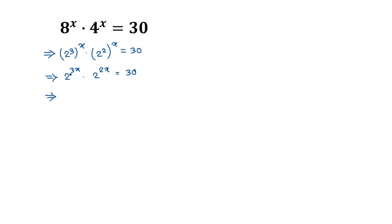So 2 to the power 3x times 2 to the power 2x equals 2 to the power 3x plus 2x, which equals 2 to the power 5x, and this is equal to 30. Now taking log of both sides, we can write log of 2 to the power 5x equals log of 30.